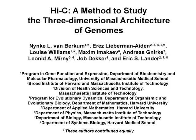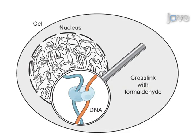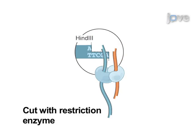Hi-C is a method of identifying long-range chromatin interactions in an unbiased genome-wide fashion. First, cells are fixed with formaldehyde, cells are lysed, and the DNA is subsequently fragmented with a restriction enzyme.